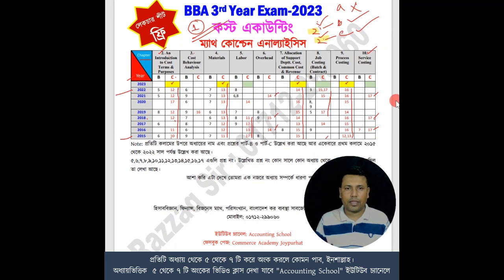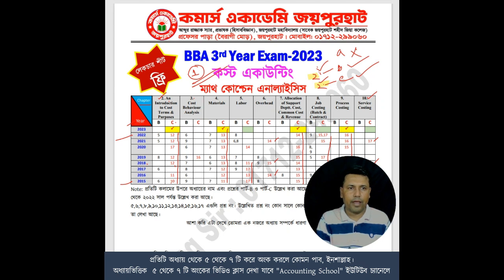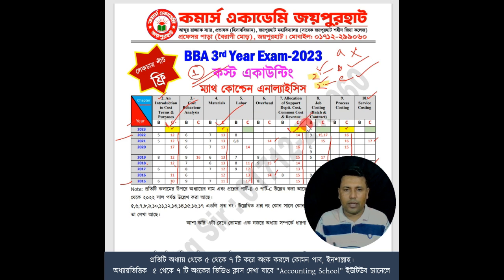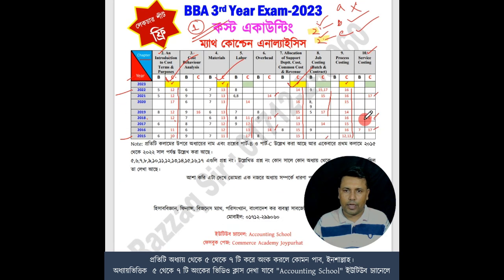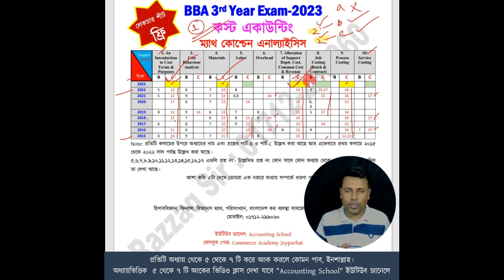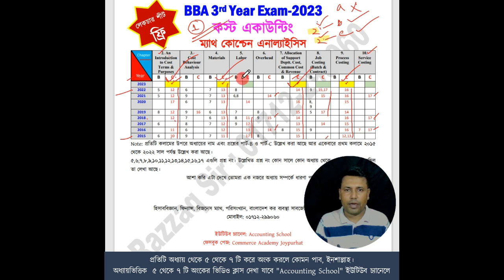If we look at number 3, we mark number 2. Number 4 is materials. Number 7 is another chapter. We have to look at these 3 things. In Part C, when we have 2 numbers, 4 numbers, 7 numbers, and 9 numbers, we will mark the number of Part C.